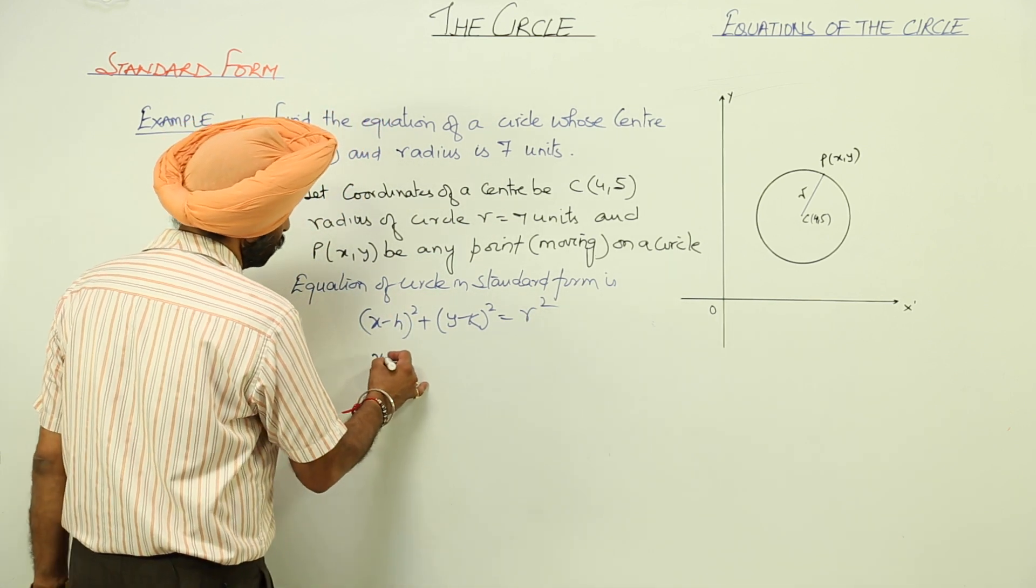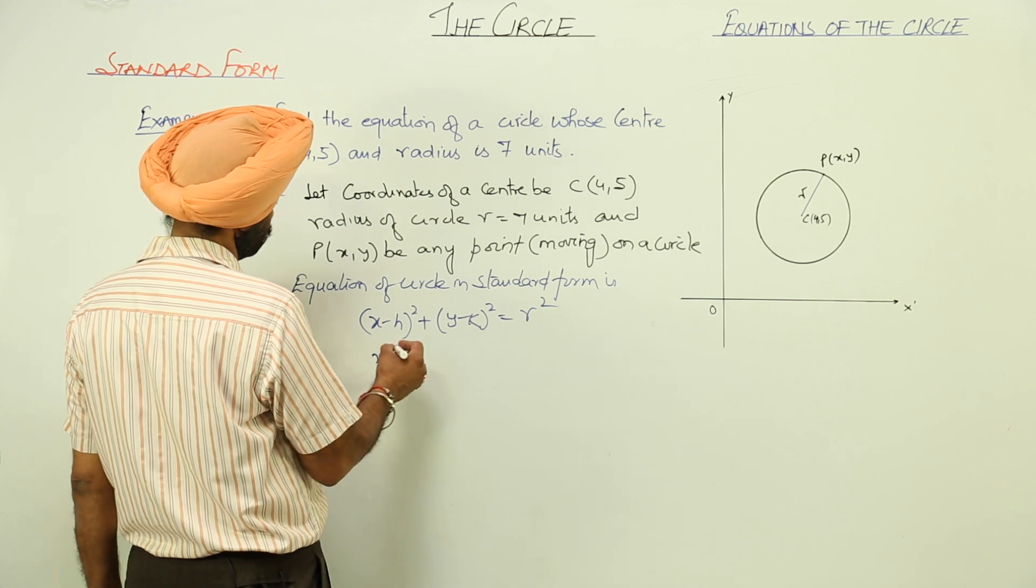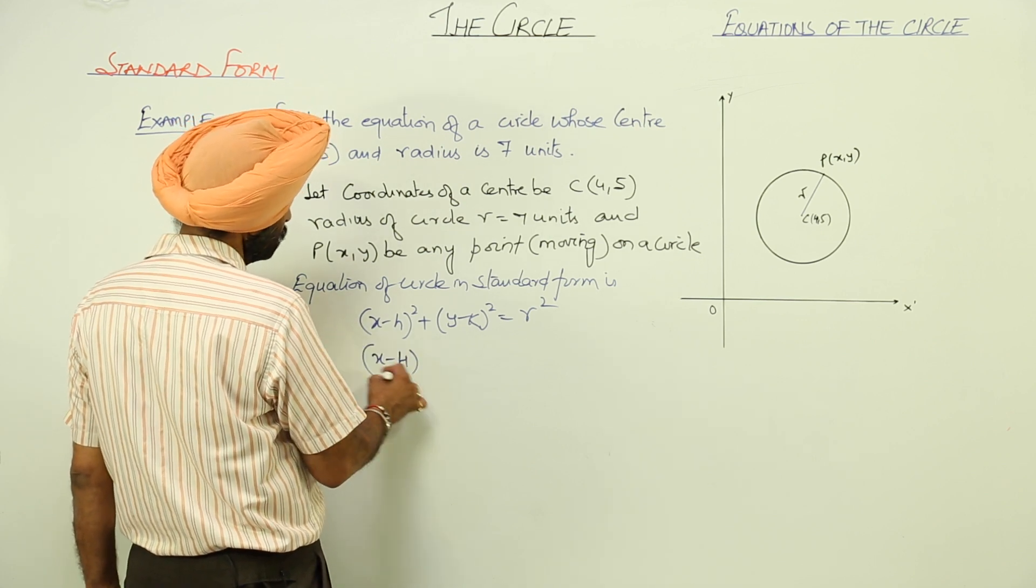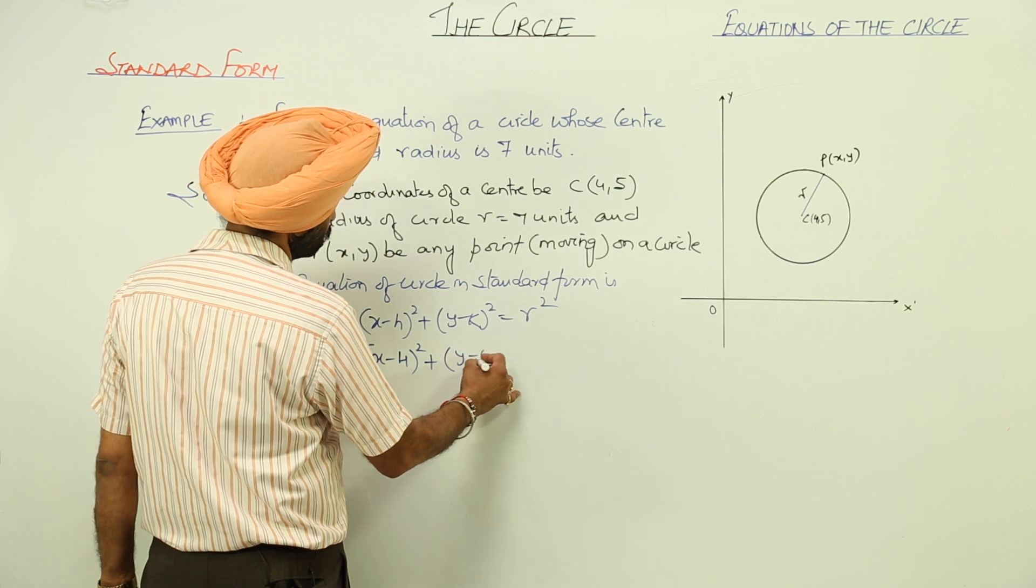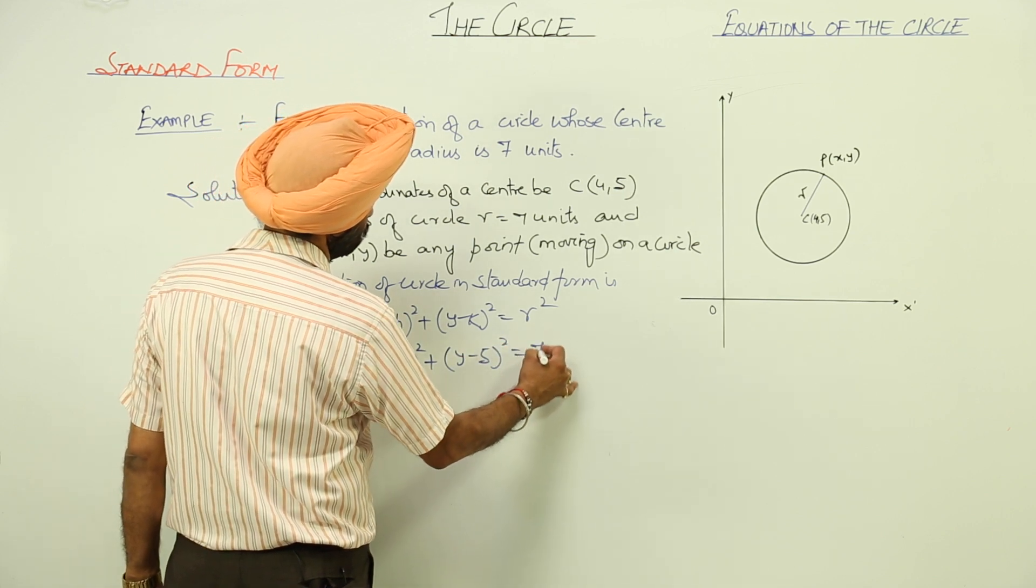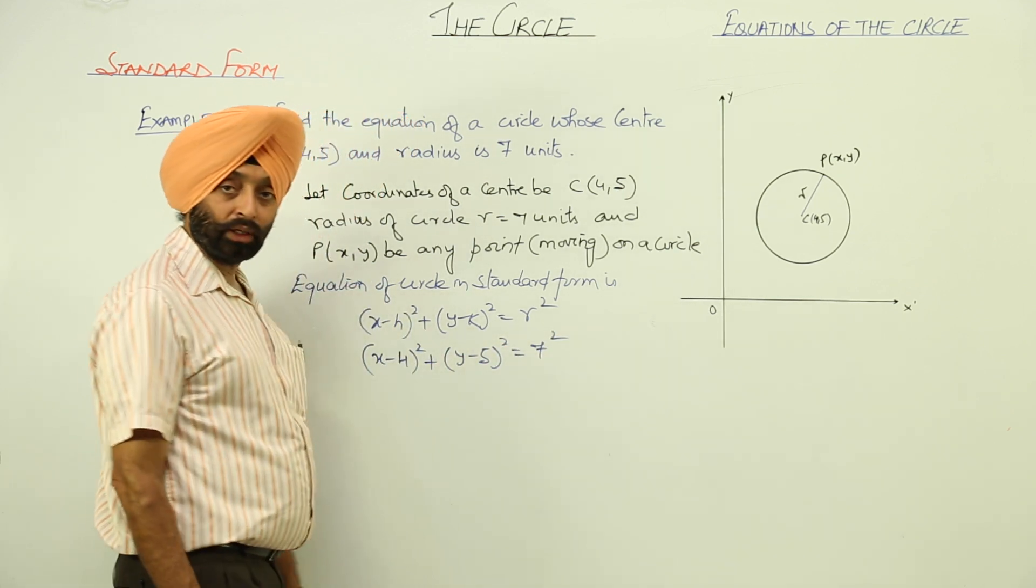Now, putting the coordinates: (x-4)² + (y-5)² = 7².